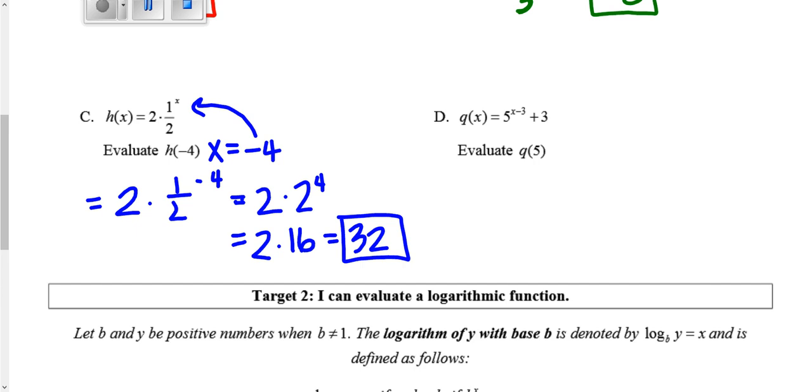Here we're plugging in x = 5, which gives us 5^(5-3) + 3. The exponent 5 - 3 = 2, so 5^2 + 3. 5^2 is 25, plus 3 is 28.